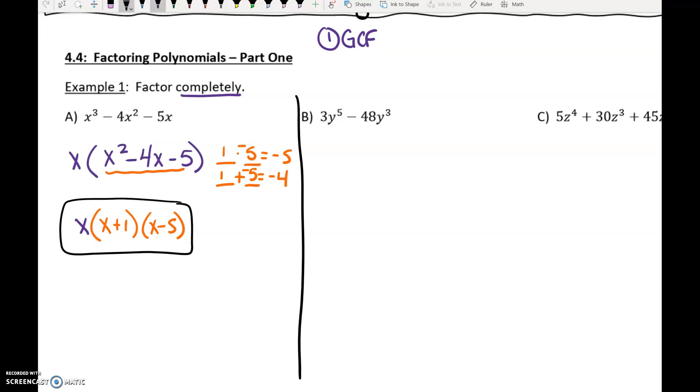Example B. What do those terms have in common? Can we divide 48 by 3? Yes, we can. So we can get 3 out of everything. And then y to the 5th and y to the 3rd, we can take y to the 3rd out. Whatever your smallest exponent is, you can take that out of all of them.